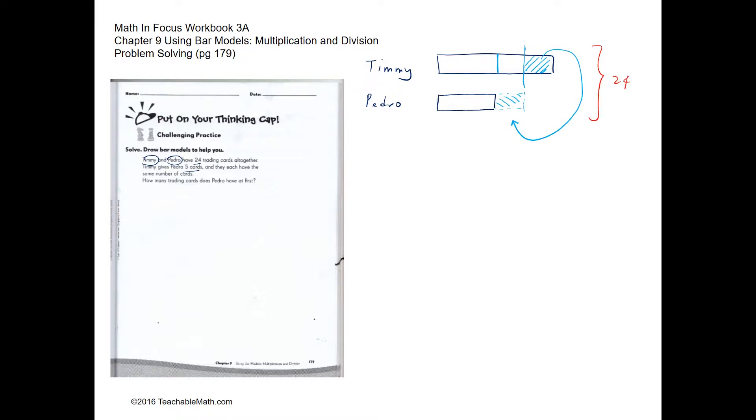What is the equation that we have over here? We are going to first erase off the extra so that it's not confusing and put in the numbers. So over here this is going to be five, this is going to be five. When Timmy gives five over to Pedro, they're going to have the same amount.